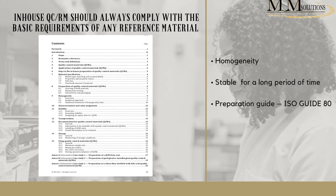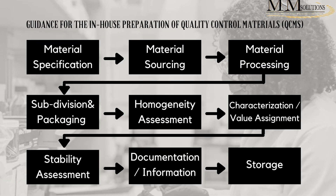ISO Guide 80 has guidance on how to actually prepare a quality control material, covering different steps to consider throughout the process. Firstly, you look at material specification — the matrix, what you want to use this QC for — it must be similar to your samples within the same concentration range. You then define what you want to do with it and go source the bulk, because you want to use it for a long period of time. Once you have the bulk, you need to process it into the format you want — it might be rocks that you need to mill, or a wet sample that you need to dry — going through milling, drying, mixing, and blending.